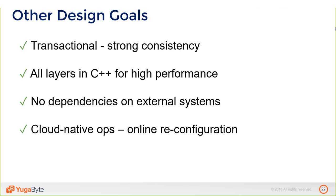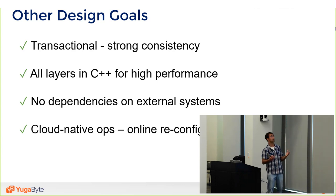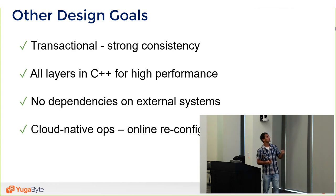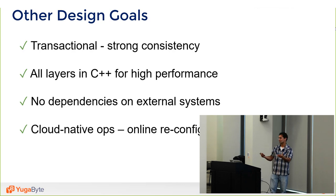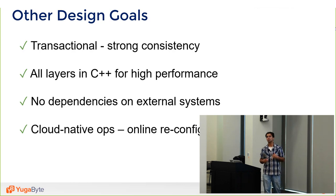Goals we set while building YugaByte: make it transactional — one of the common failings of NoSQL today is that you cannot update two keys atomically or get consistent secondary indexes. Make it highly performant, because performance is a key concern in the cloud and one reason people augment deployments with a cache. And no dependencies on external systems like ZooKeeper, which HBase depends on — those get very hard to deploy in hybrid or multi-zone environments.